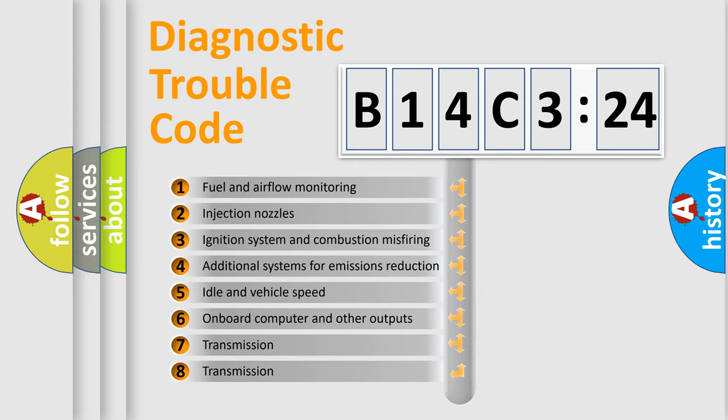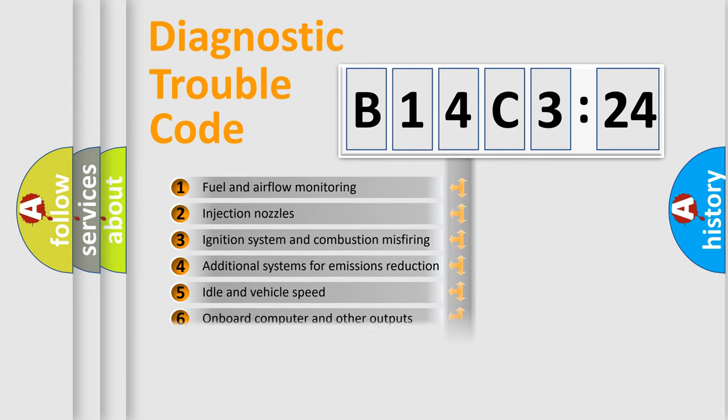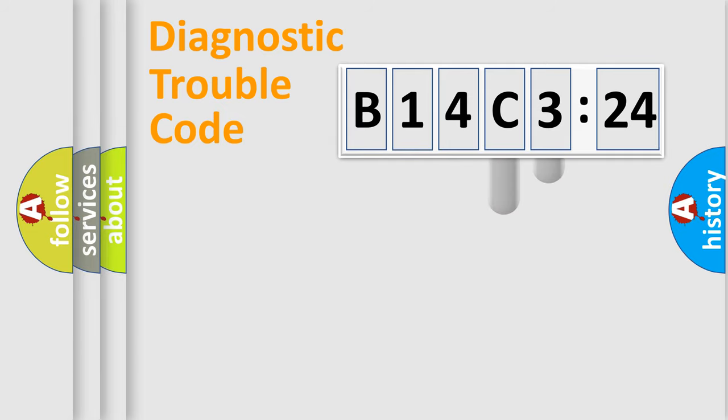The third character specifies a subset of errors. The distribution shown is valid only for the standardized DTC code. Only the last two characters define the specific fault of the group.